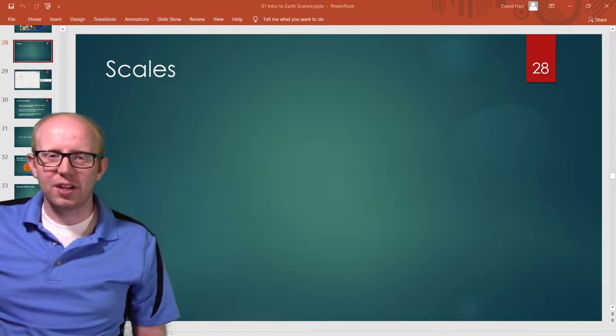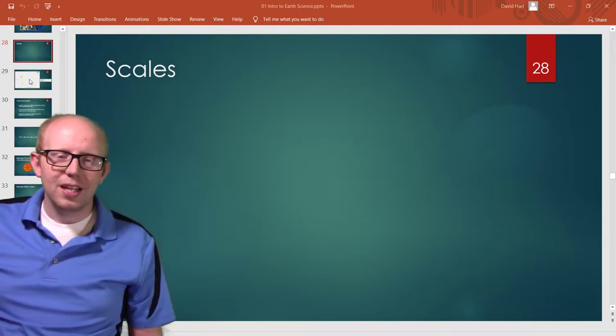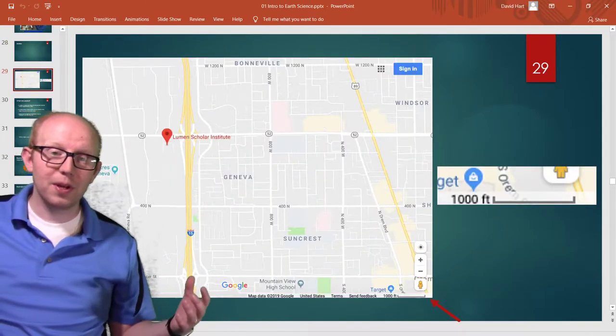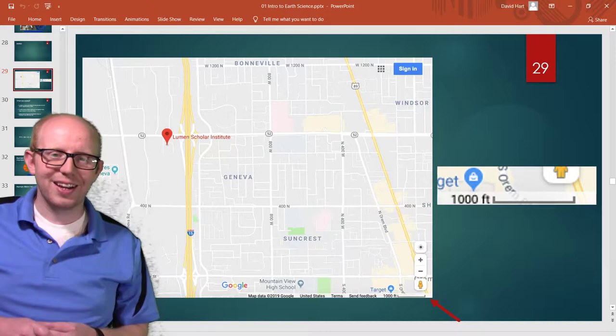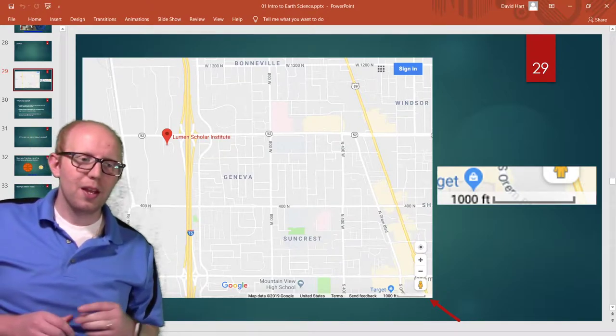So the first example of a scale that I want to show you guys that you probably didn't realize you were seeing most of the time is the scale you see on a map. If you pull up Google Maps and you have some building you're trying to get to, if you actually look in that bottom right corner there's actually a little marking that shows a certain width.